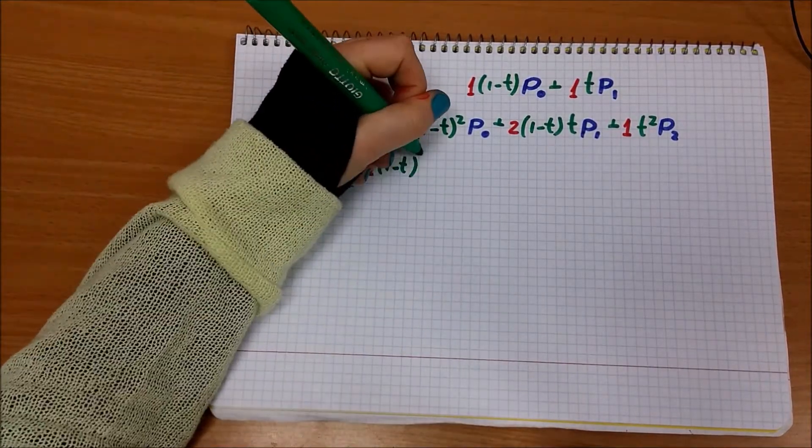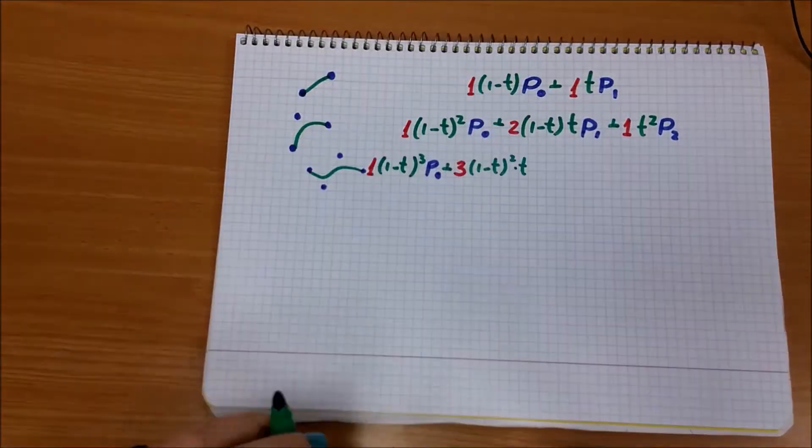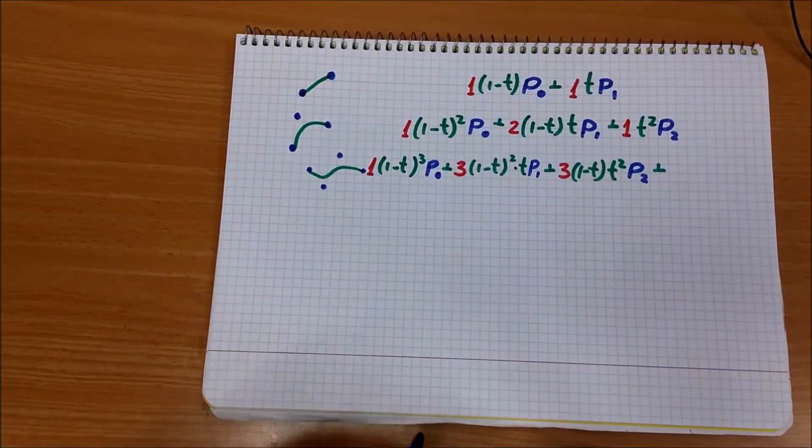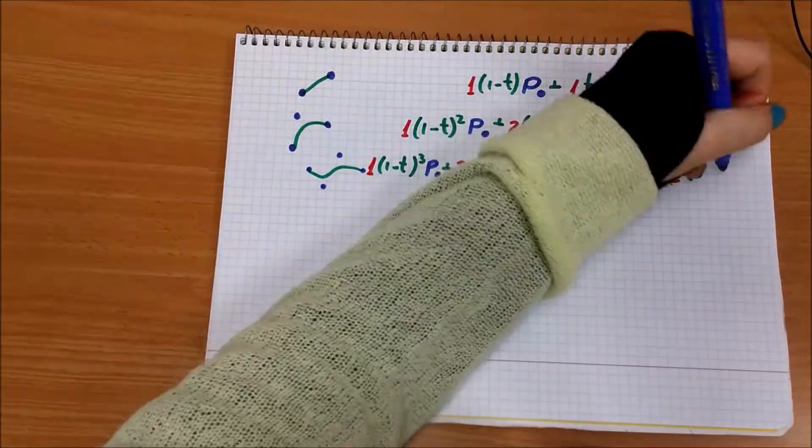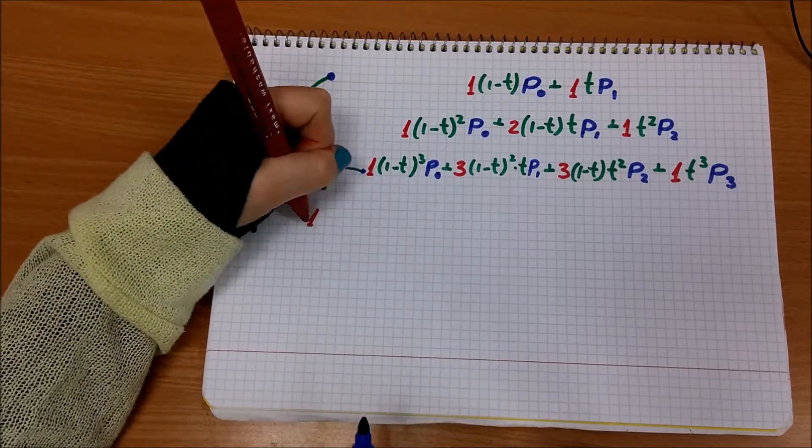Here is what we get for 4 control points. 5 control points.